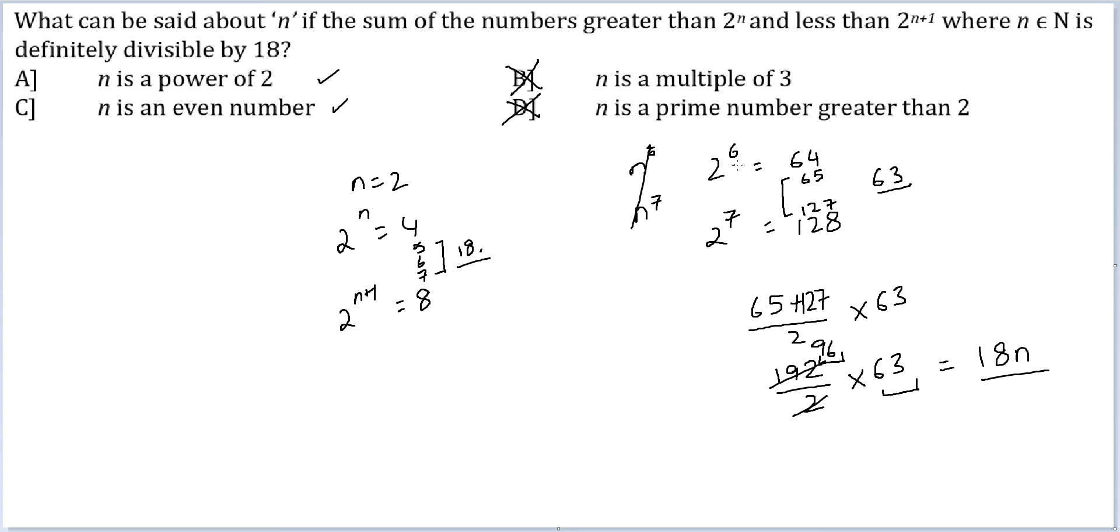So even when n was not a power of 2, we got our result. So A is also eliminated from the running. The only option that is left is C and that should be my answer for this question.